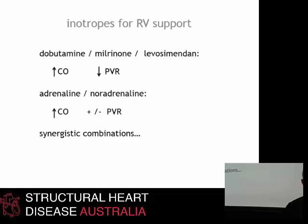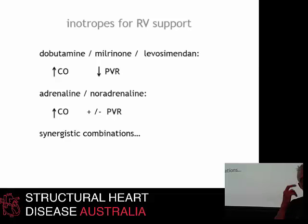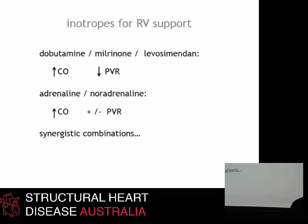In terms of inotropes for RV support, it really doesn't matter what you use — they're all effective. Dobutamine, milrinone, and levosimendan all have the advantage of not only increasing cardiac output but also decreasing PVR. There used to be teaching that adrenaline and noradrenaline were bad in patients with severe pulmonary hypertension because of increased PVR, but in fact they have relatively minor effects on PVR because of their predominant effect of increasing right ventricular stroke volume. So adrenaline and noradrenaline are good agents to use in these patients.